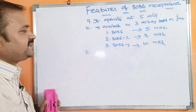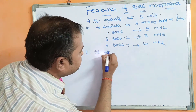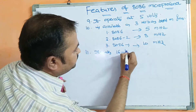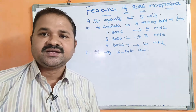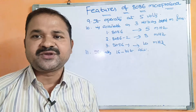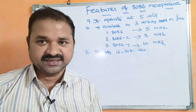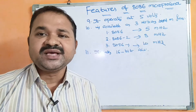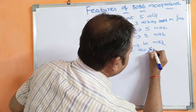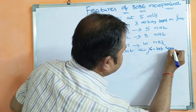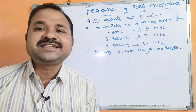The 8086 microprocessor uses a 16-bit ALU. ALU stands for Arithmetic Logic Unit and is the brain of the CPU, used to perform operations and execute instructions. It also has 16-bit registers, meaning the size of each register is 16 bits.